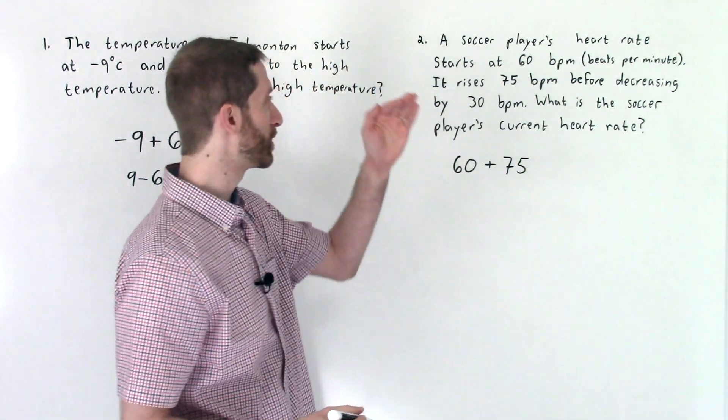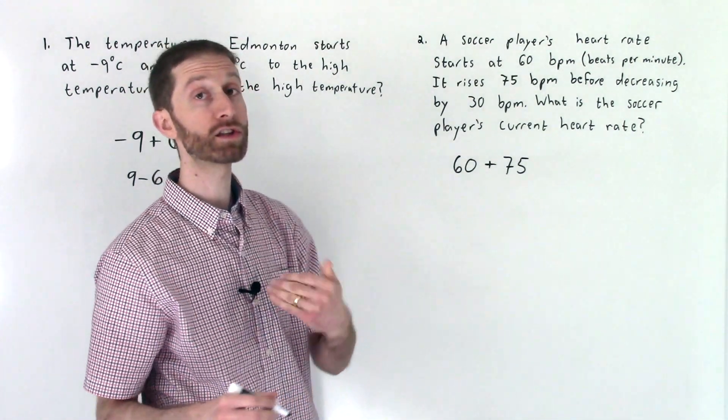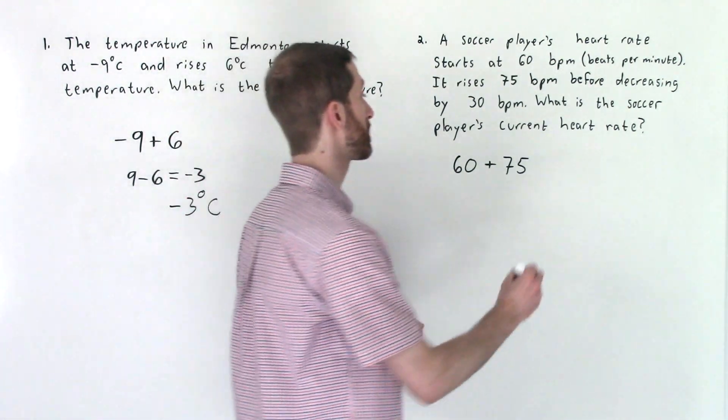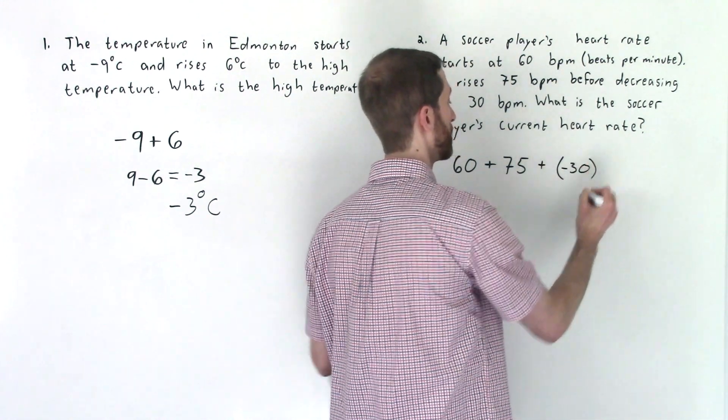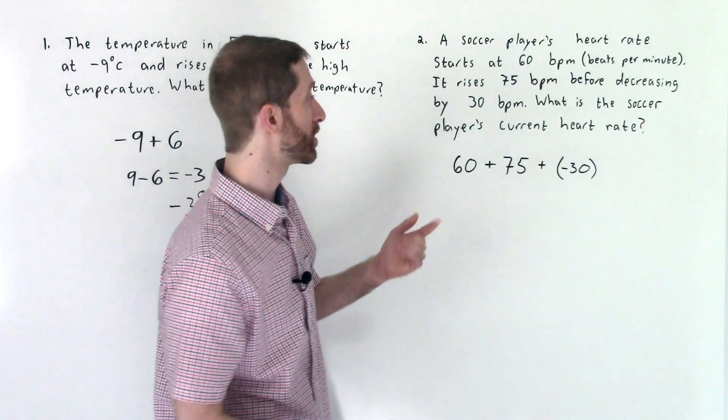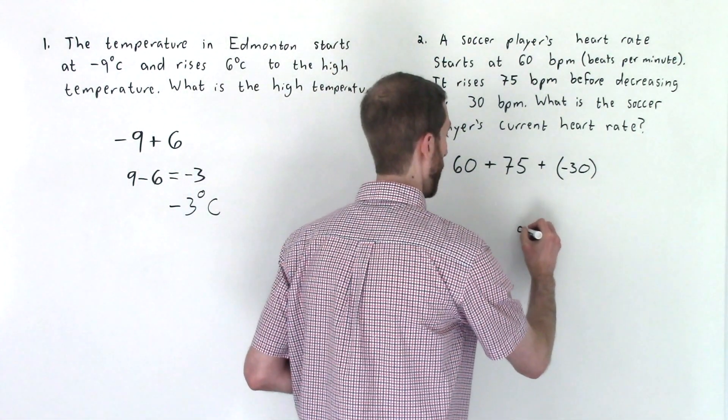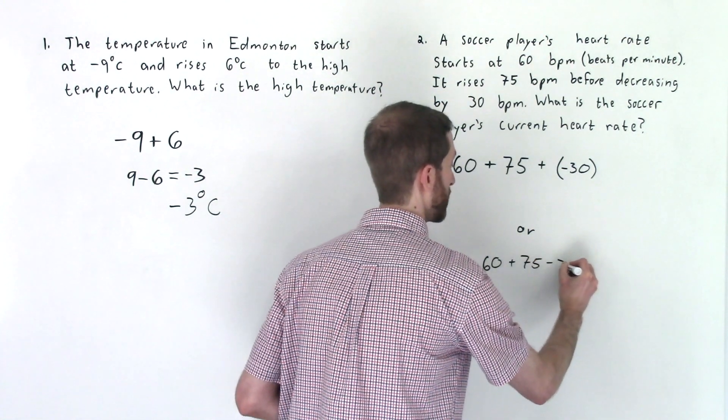And then finally, we will decrease by 30 BPM. We can either write that as minus 30. That's fine. Or you could see that as plus a negative 30. So we add on a decrease of negative 30. So you could do that as this problem, or we could do it as 60 plus 75 minus 30. And we'll do both just to see it's the same problem.